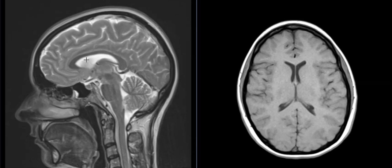The fluid flows out from the lateral ventricles into the third ventricle, down through a narrow channel into the fourth ventricle, and then out and down around the spinal cord, and then it comes back up and around and is resorbed up here. So the fluid just flows through the brain and down through the spinal canal, and back up around where it's resorbed. This patient has normal-sized ventricles.